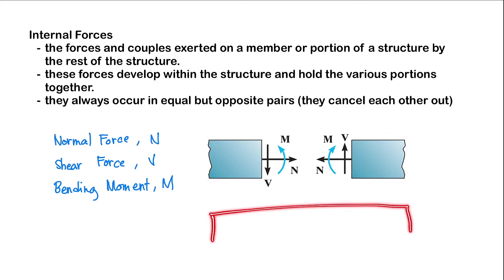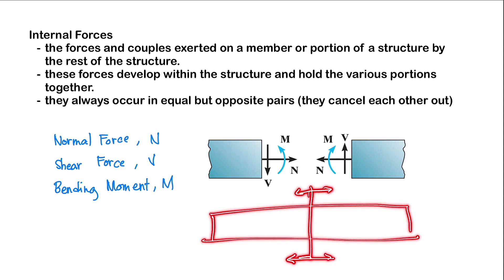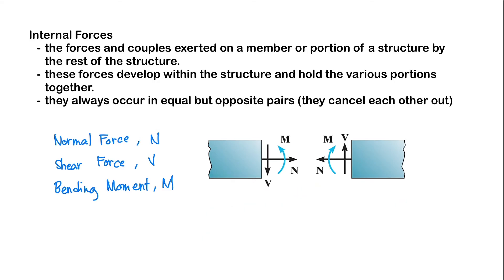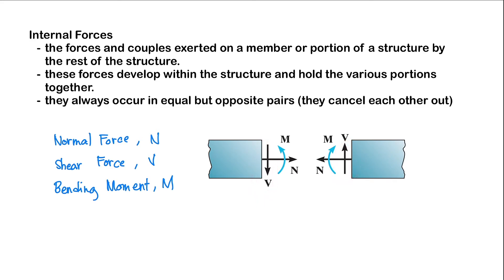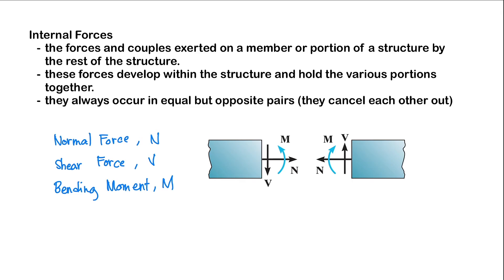If these internal forces are to be specified at a point in a member, the method of sections must be used. For example, if we have a beam, we are going to section our beam — we're going to cut it. This requires that the cut or section be made perpendicular to the axis of our member. Once we have the free body diagrams of each of the segments, we can now place our internal forces: normal forces are perpendicular to the cut section, shear force is parallel to the cut section, and moments cause rotation. They are in opposite directions and have equal magnitudes. We then apply our equations of equilibrium to determine our internal forces.